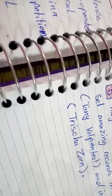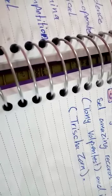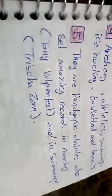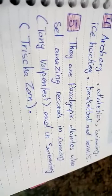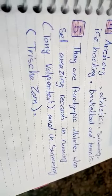Now, look at question number 5. Who are Tony Volopontest and Trisha Zorn? They are Paralympic athletes who set amazing records in running, Tony Volopontest, and in swimming, Trisha Zorn.